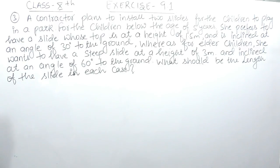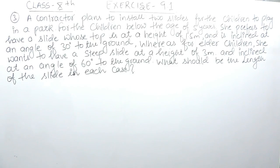The question says a contractor plans to install two slides for children to play in a park. For children below the age of five years, she prefers a slide whose top is at a height of 1.5 meters inclined at an angle of 30 degrees to the ground. For elder children, she wants a steep slide at a height of 3 meters inclined at 60 degrees to the ground. We need to find the length of the slides in each case.